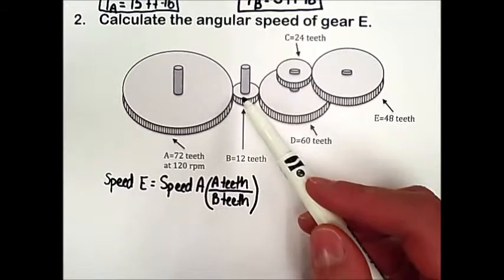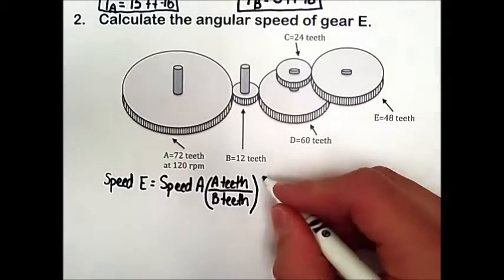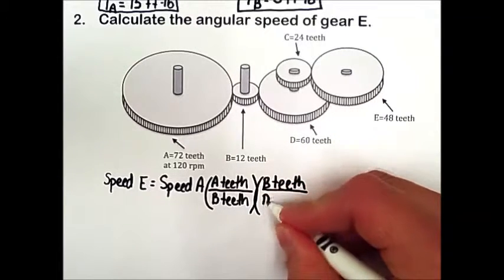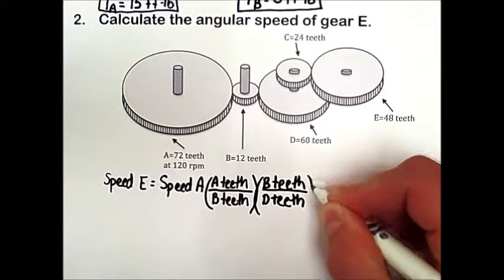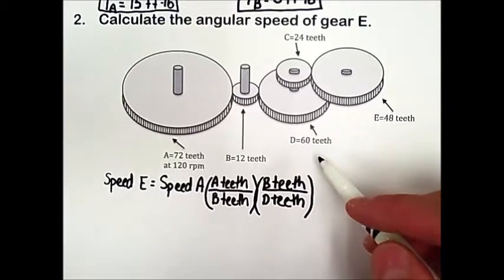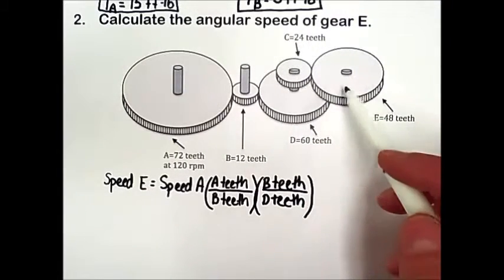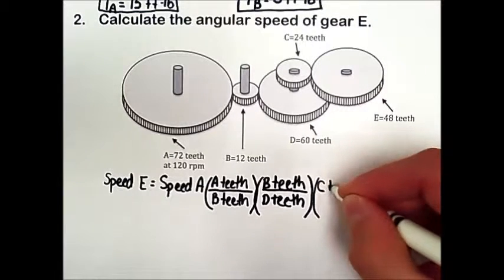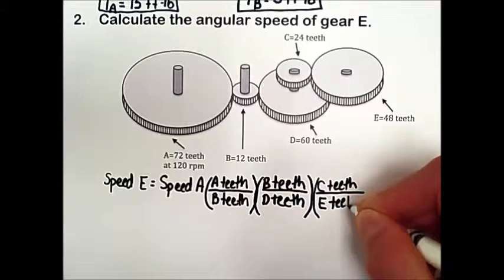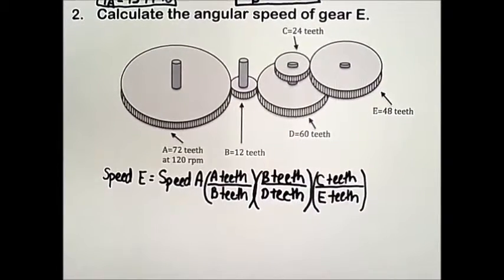The teeth mesh between gears A and B, and next between gears B and D, so gear B is driving gear D. We multiply by the number of teeth gear B has divided by the number of teeth gear D has. Gear D and gear C are both on the same shaft and their teeth do not mesh, so we don't multiply by any ratio of D to C. But gear C's teeth do mesh with gear E's teeth, so we take the number of teeth of gear C divided by gear E. Now that we have our setup, we can substitute in all of the numbers of teeth.